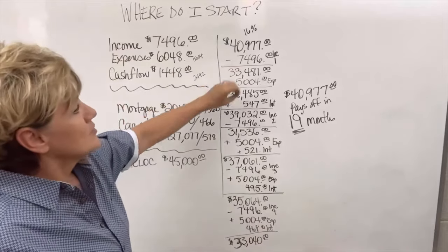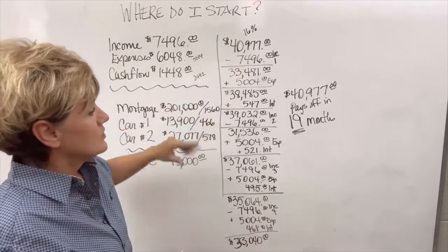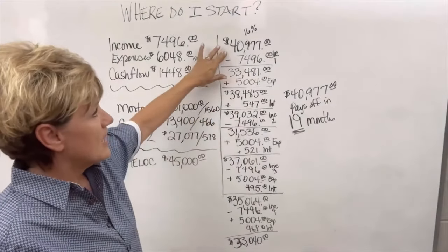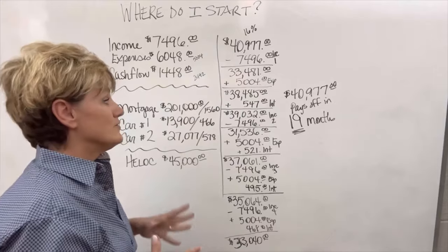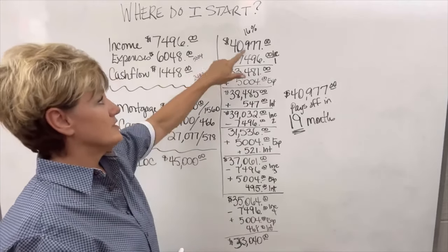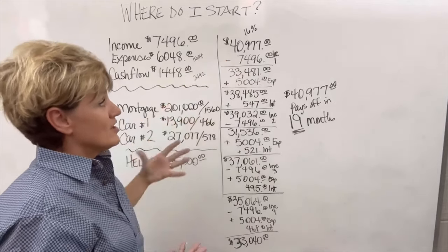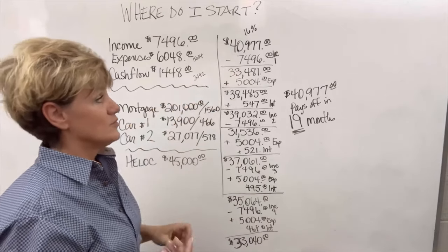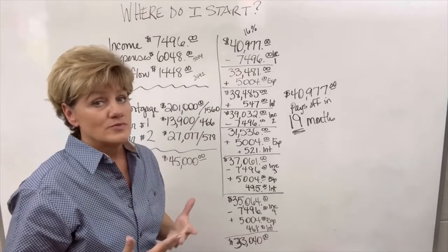So their income goes in in month one. Their expenses of $5,004 will come back out. Their interest would come out at $547 off of the HELOC at 16%. They will never pay the 16% on the $40,977 because as soon as the income goes in, this balance drops out to $33,481. That's what happens with Velocity Banking.